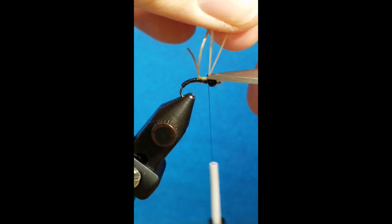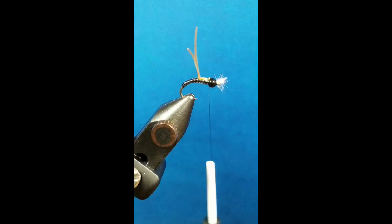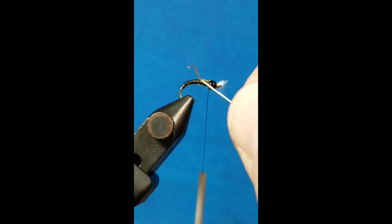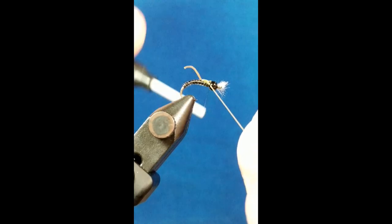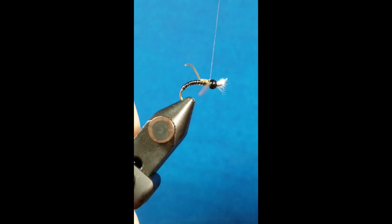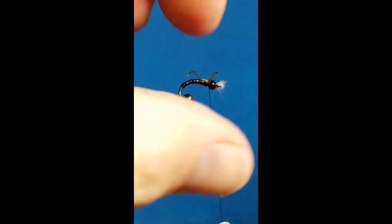For the wing buds that come in on the side, I want about a 45-degree angle right to the bottom of the bead. That just provides an accurate imitation of the natural. Lock it in there, snip off the excess.